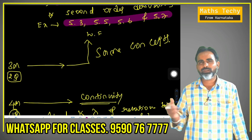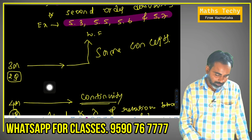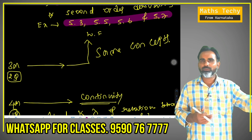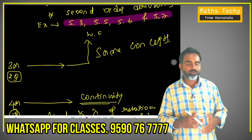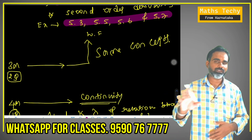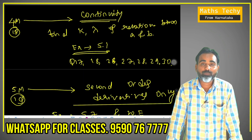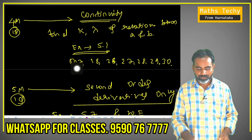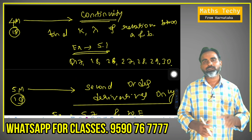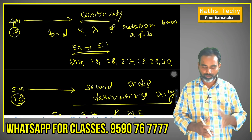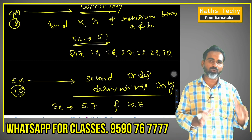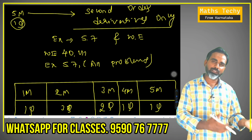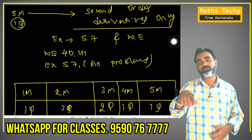We will add 2 marks and 3 marks examples. Find the value of K, find the value of lambda, find the value of A and B — exercise 5.1, questions 7 to 30. Maximum: find the value of K, lambda, A and B. But don't take risk — study it. In 5 marks, the second order of derivatives is a fixed question. In 5.7 and the worked examples, this is the miscellaneous problem — solve it.